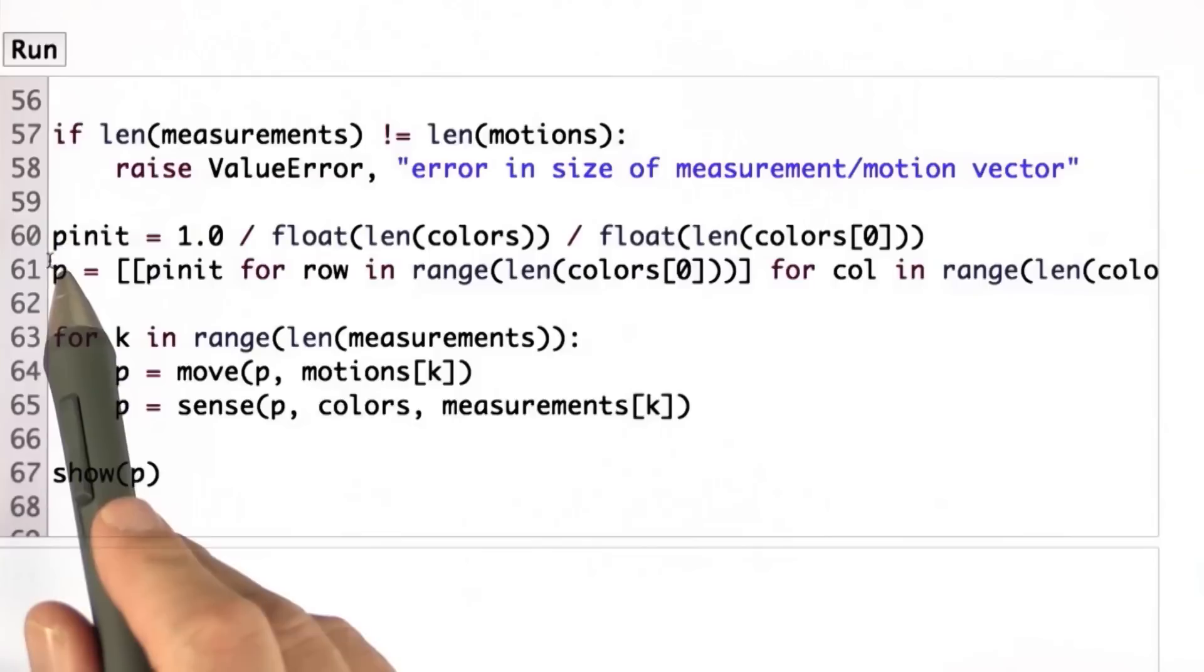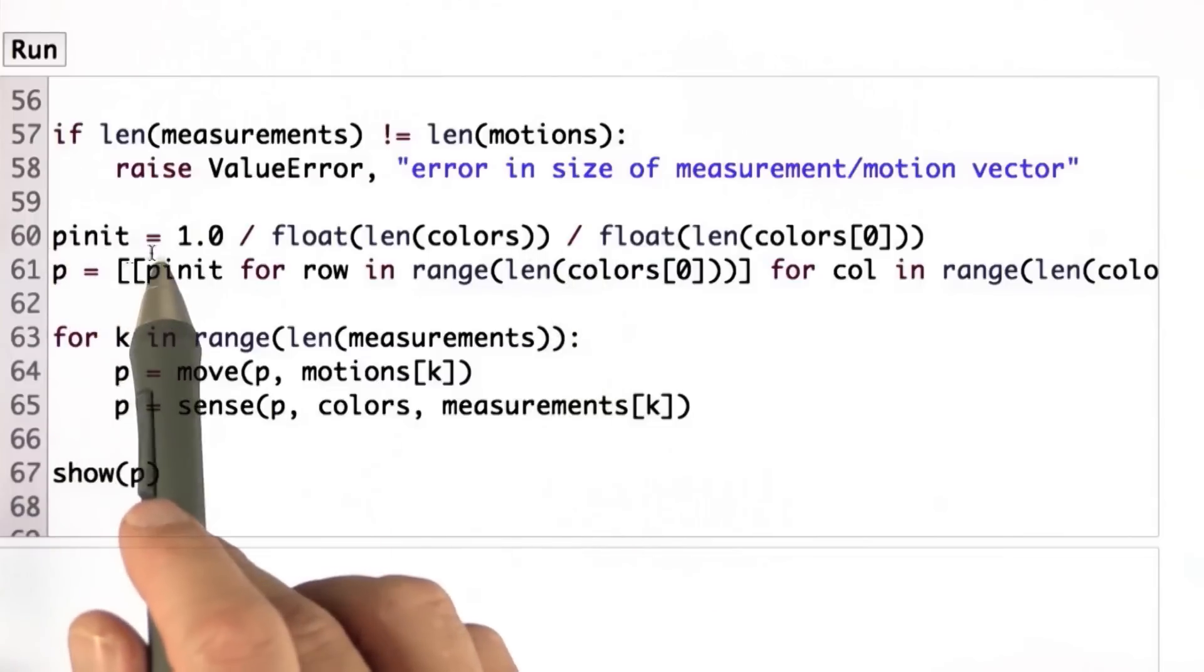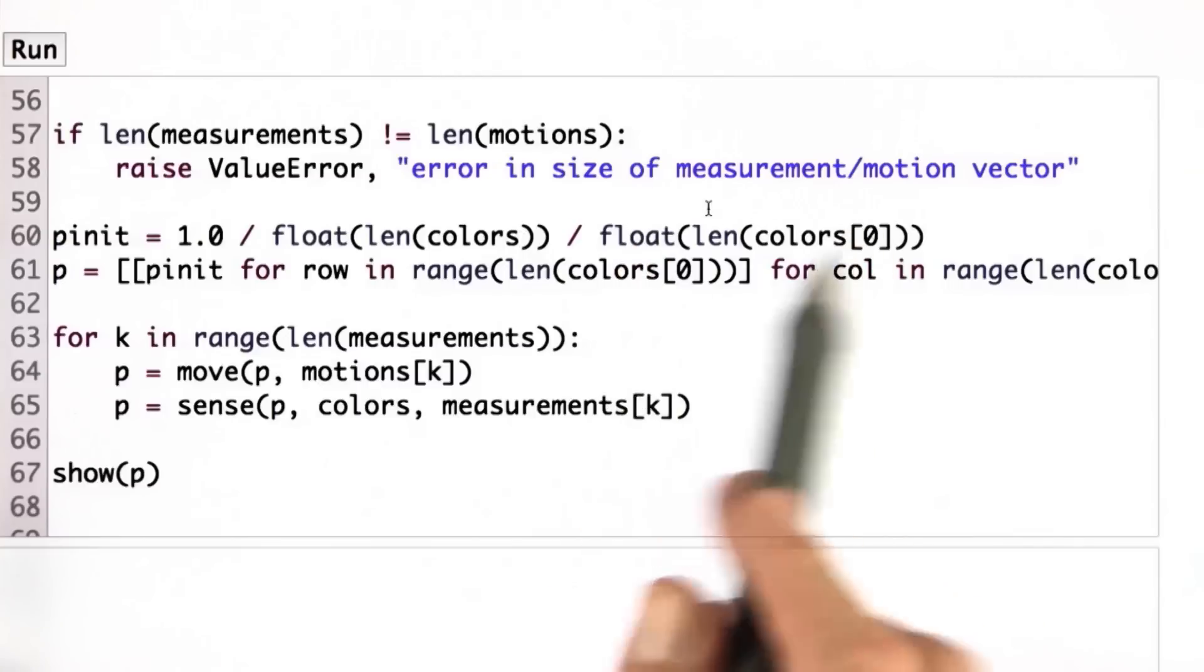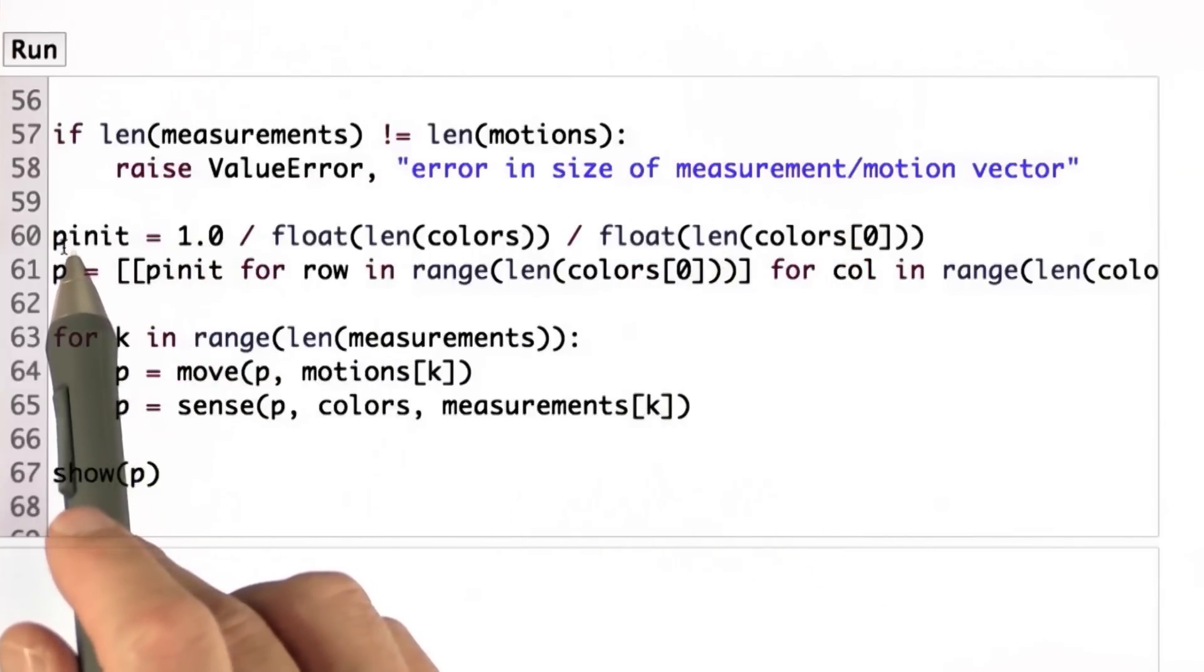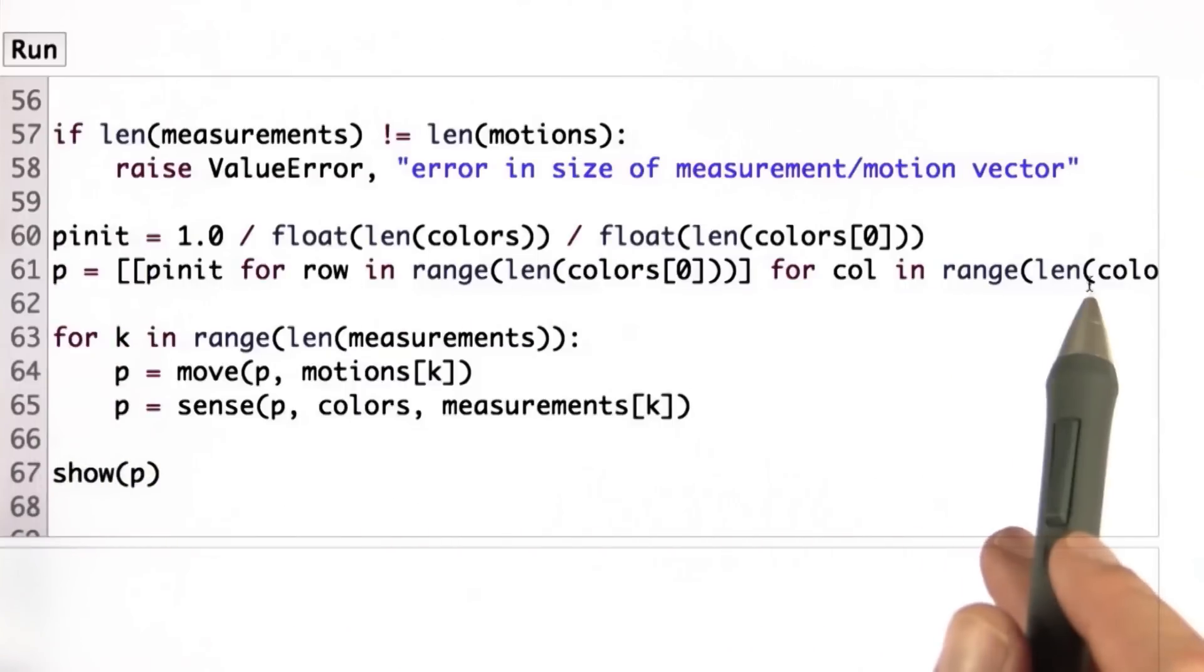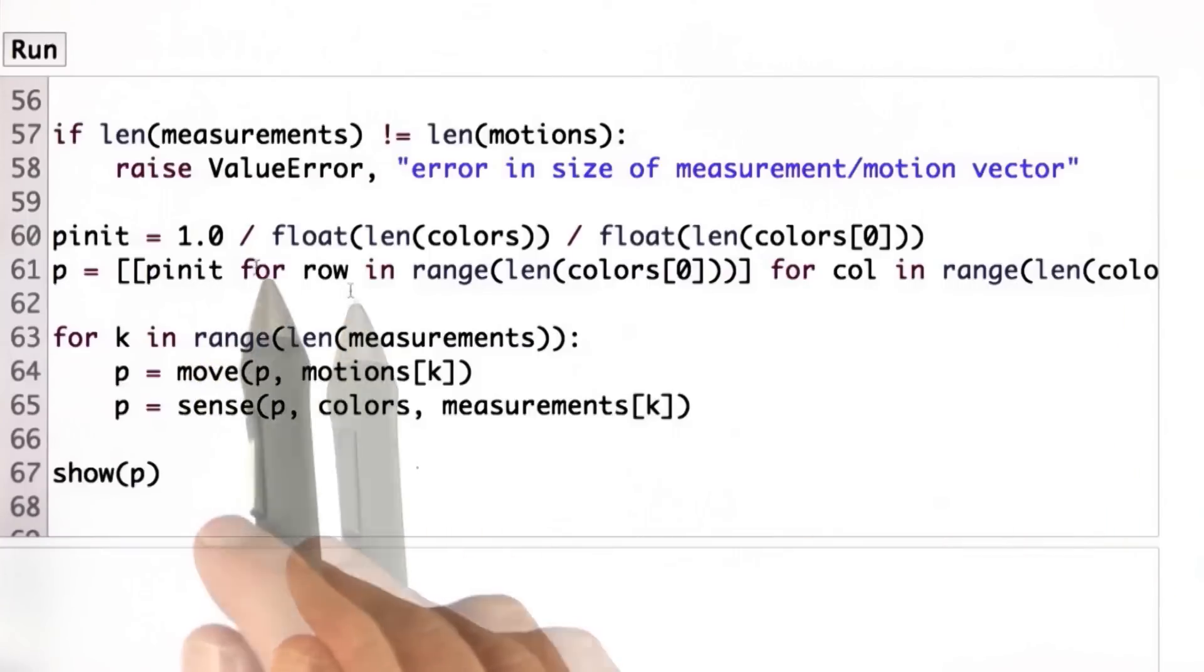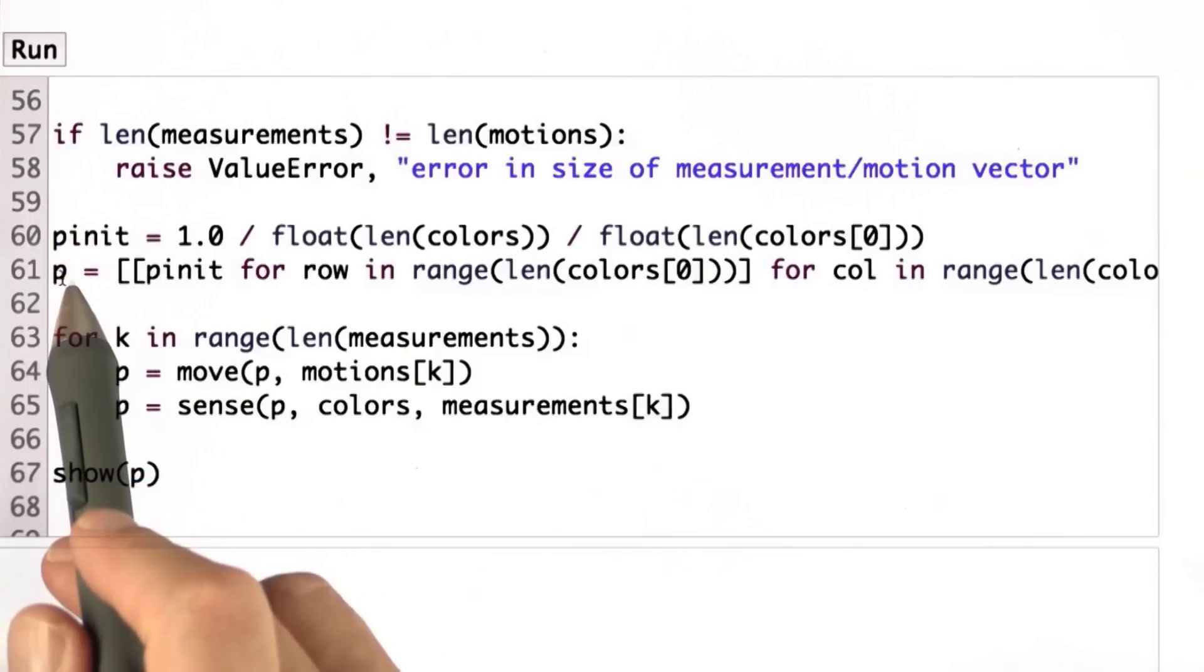Then here is my initialization of my probability table. I compute my initial uniform distribution by calculating the size of the array, the number of rows times the number of columns, and then dividing 1 over the product of those to be my initial distribution value. And this thing over here just builds up an array of the size of my colors array, but initializes it with the value of p in it. These two lines over here give me an initial uniform distribution.